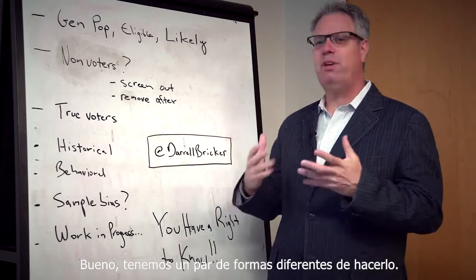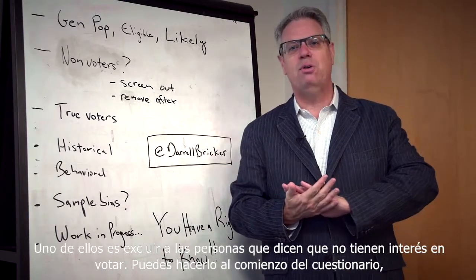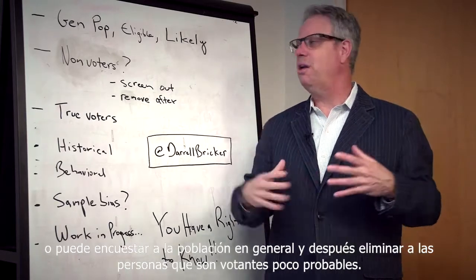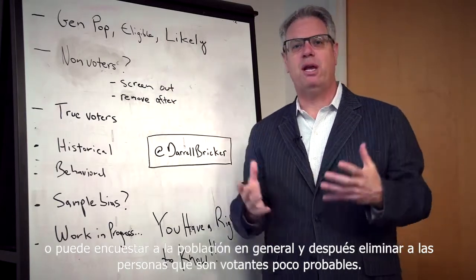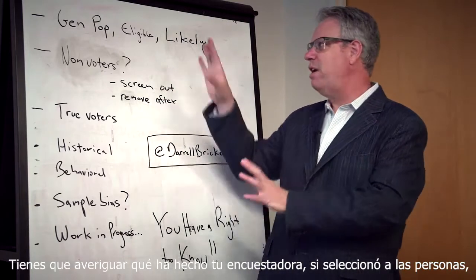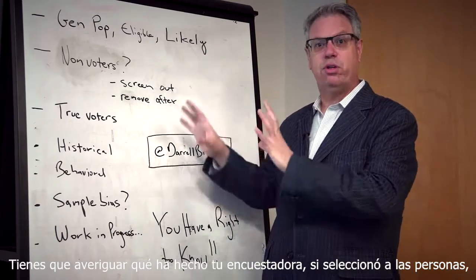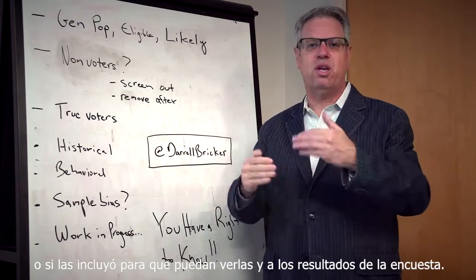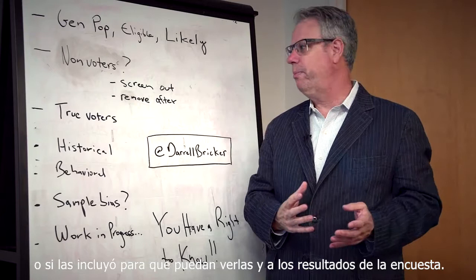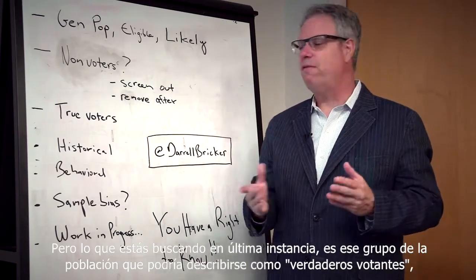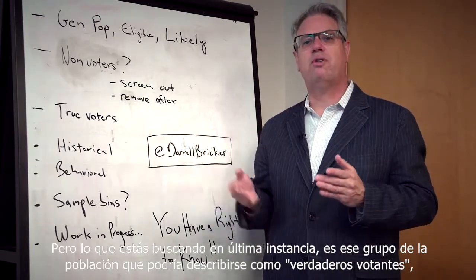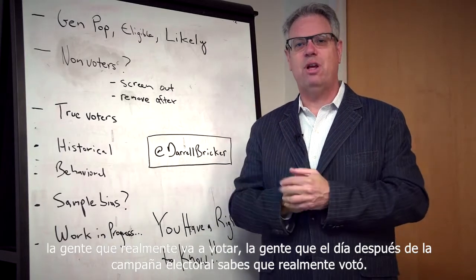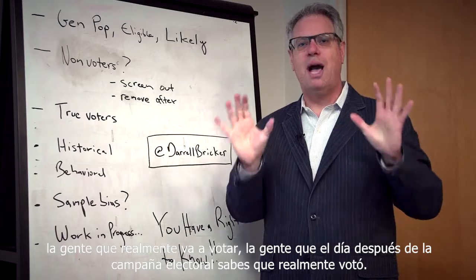We have a couple of different ways of doing it. One is to screen people out who say they have no interest in voting — you can do it at the start of the questionnaire. Or you can interview the general population and remove people who are unlikely voters afterwards. You have to find out which your pollster has done: whether they didn't even interview non-voters, or whether they included them to look at them in the survey results as well. But what you're ultimately looking for is that group of the population you could describe as true voters — the people who are actually going to vote, who the day after the election you know actually voted.